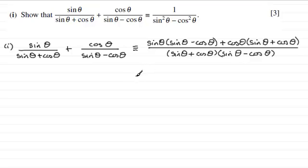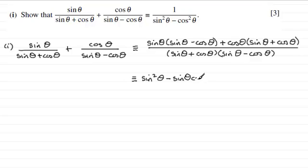Now we expand the numerator. Sine theta times sine theta gives sine squared theta, and sine theta times minus cos theta gives minus sine theta cos theta. Then cos theta times sine theta gives plus cos theta sine theta, and cos theta times cos theta gives plus cos squared theta.